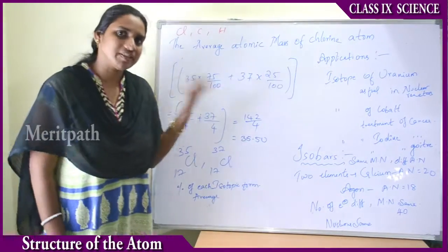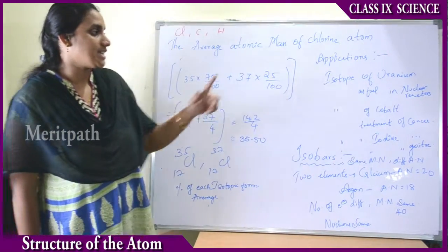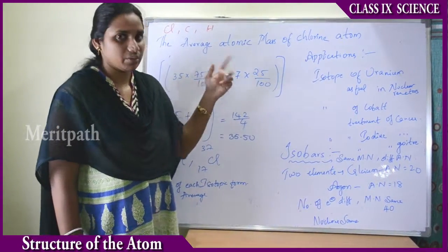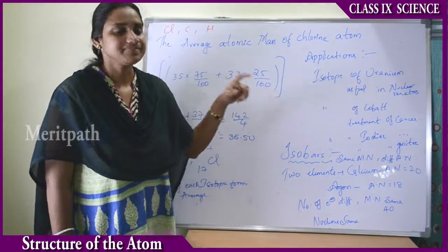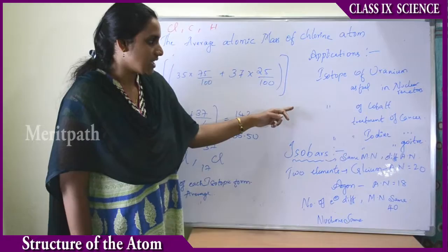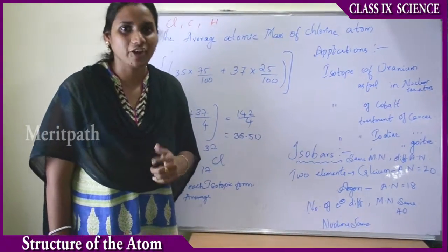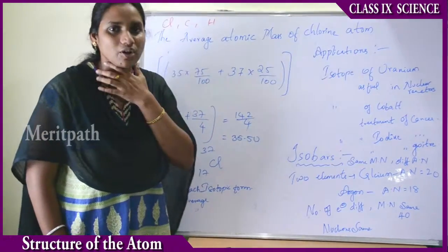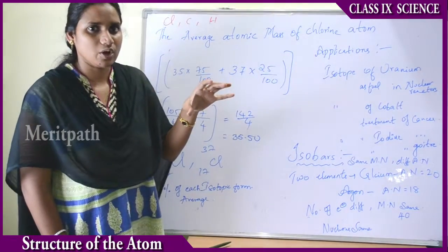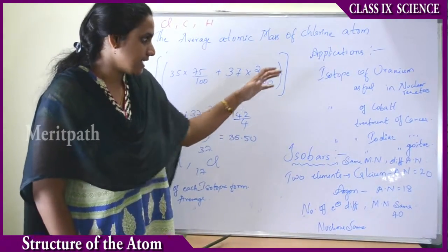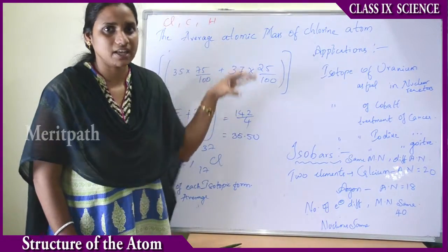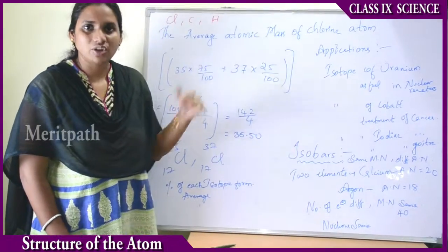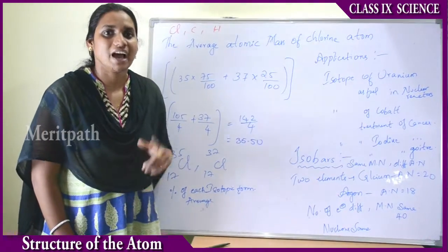Now let us see the applications of isotopes in practical life. The isotope of uranium (U-235) is used as a fuel in nuclear reactors. The isotope of cobalt is used for the treatment of cancer, and the isotope of iodine is used for the treatment of goiter — a swelling related to thyroid disease. These isotopes of uranium, cobalt, and iodine are used in the treatment of many diseases.